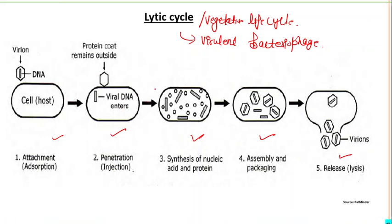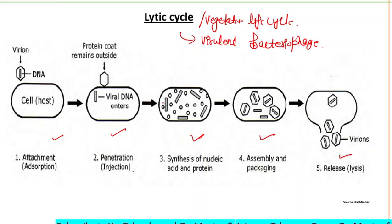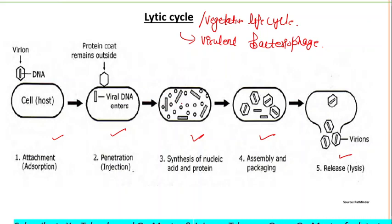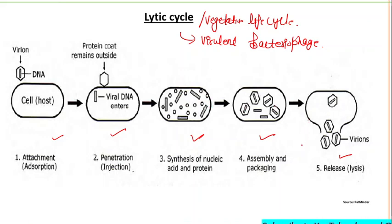Once the bacteriophage genome enters the cytoplasm, it subverts the host's nucleic acid and protein synthesis apparatus, initiating synthesis of viral proteins and DNA. As viral proteins are synthesized they assemble into viral components like the head and tail. After assembly, viral proteins cause lysis of the host cell and the new virions are released into the environment.